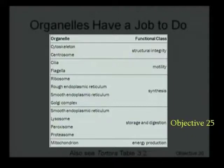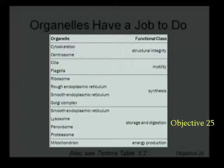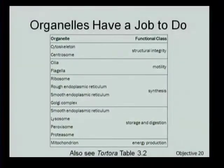Finally, in objective 25, we'll be looking at the storage and digestion organelles: the smooth endoplasmic reticulum — same name but in a different role — where we'll examine its storage and digestion functions, along with lysosomes, peroxisomes, and proteasomes, which also fit in this category.